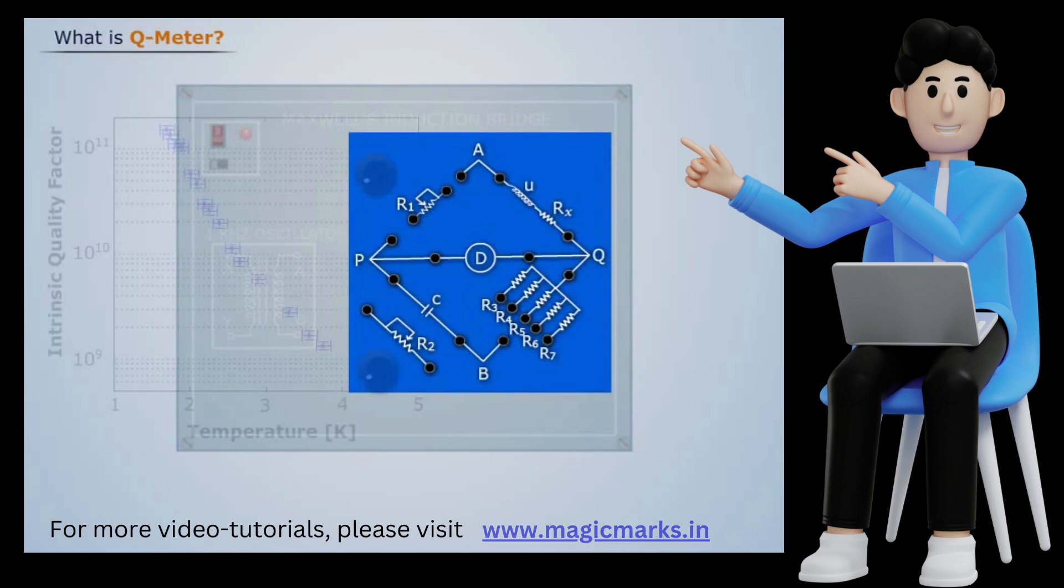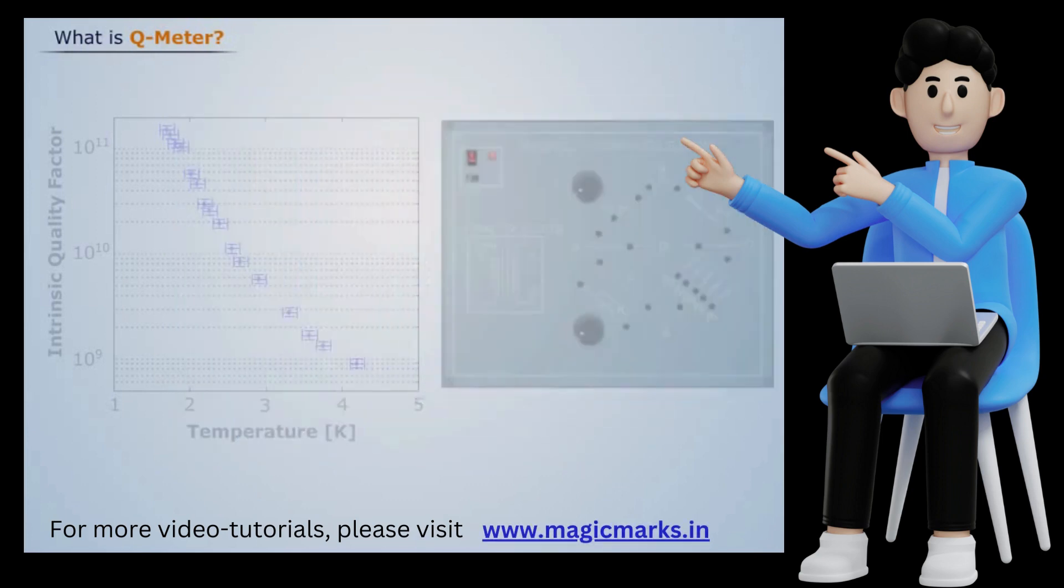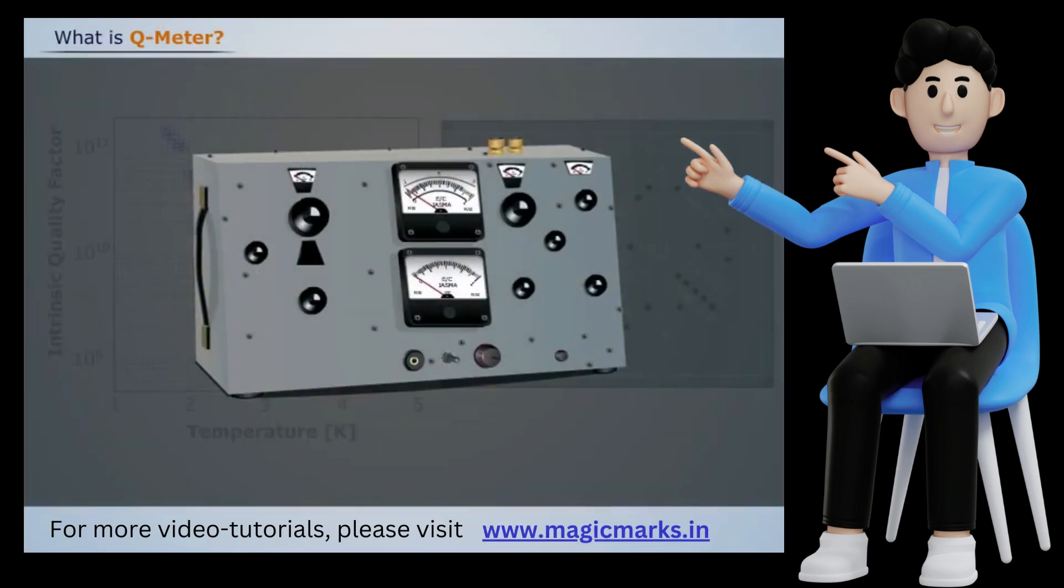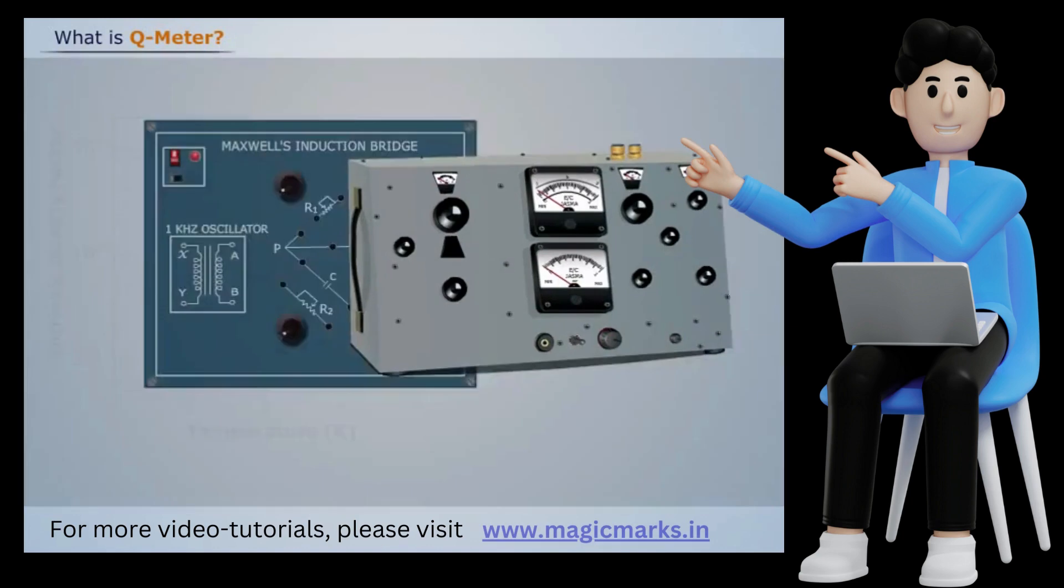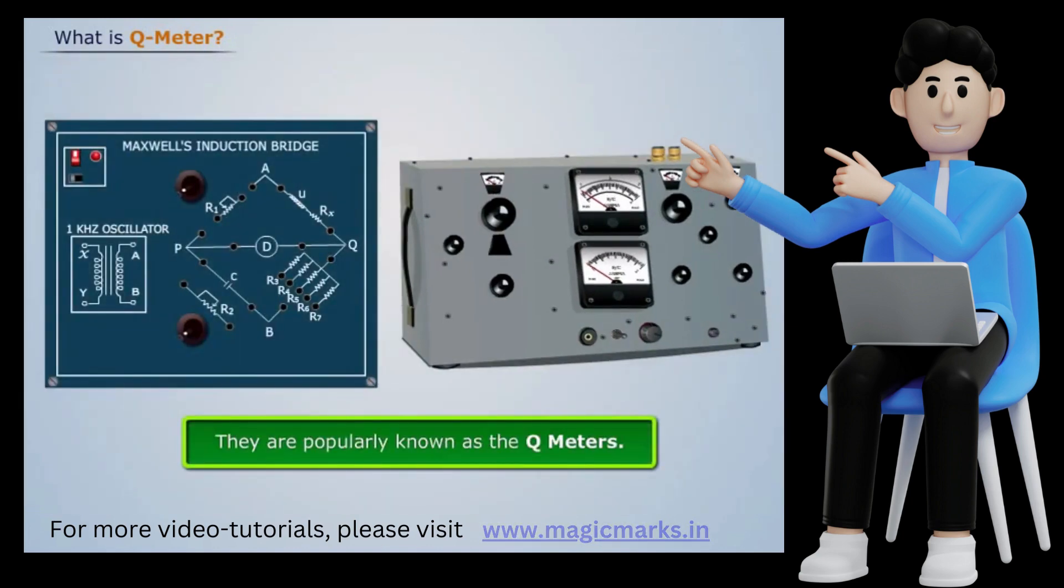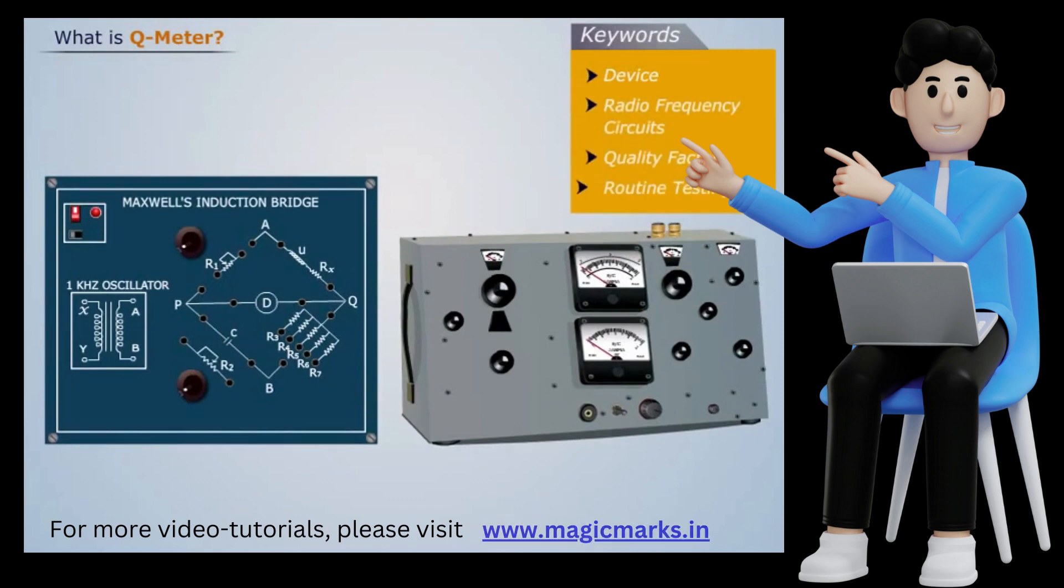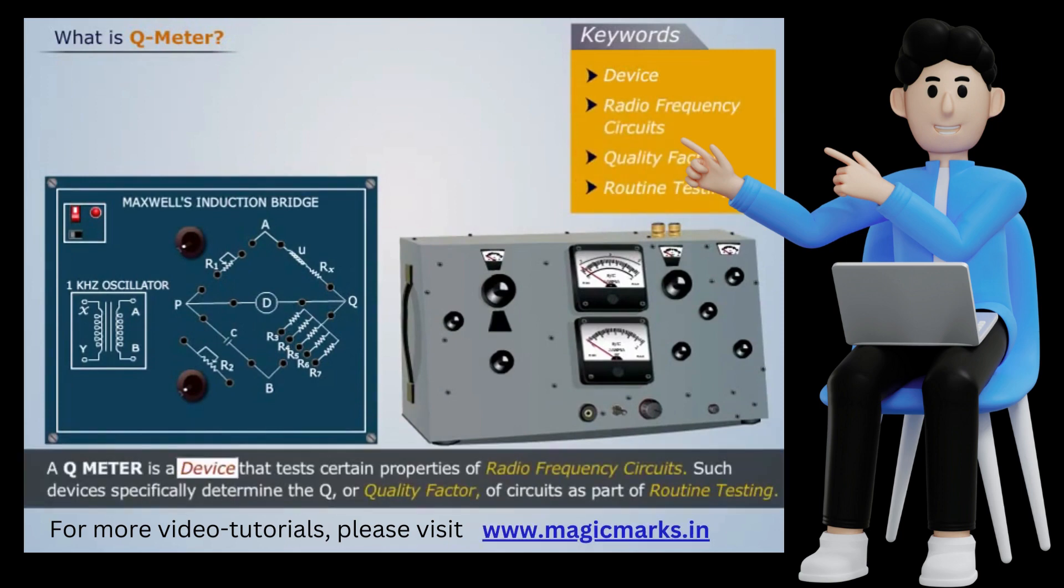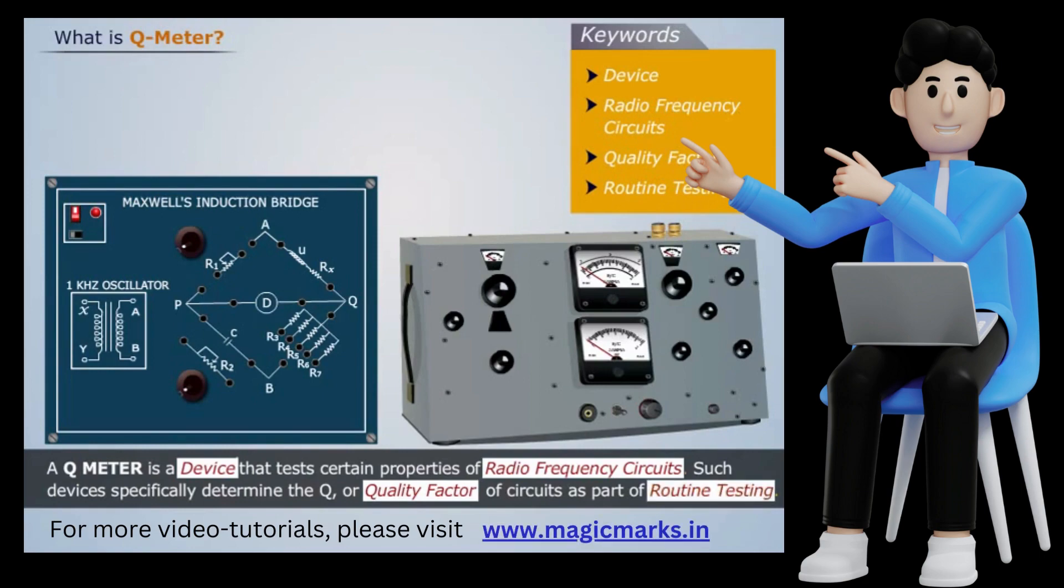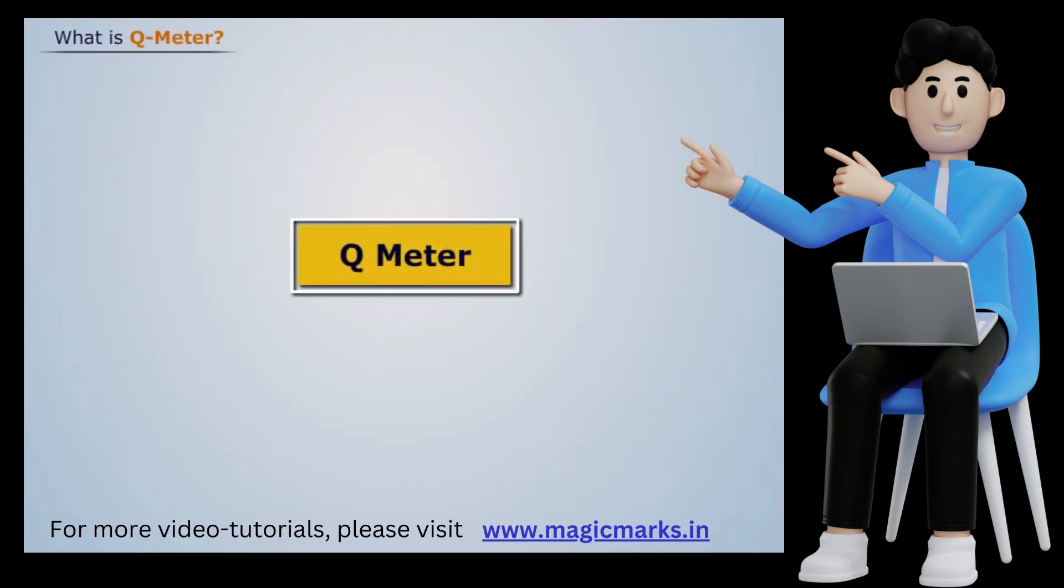So special meters are used for determination of Q accurately. They are popularly known as the Q meters. Thus a Q meter is a device that tests certain properties of radio frequency circuits. Such devices specifically determine the Q or quality factor of circuits as part of routine testing.